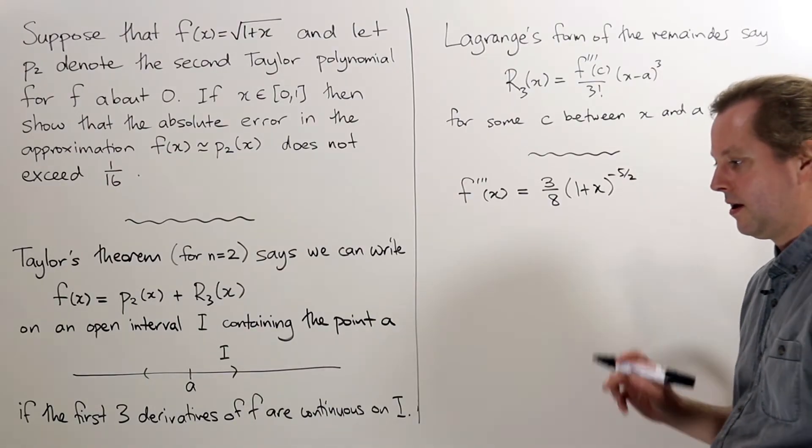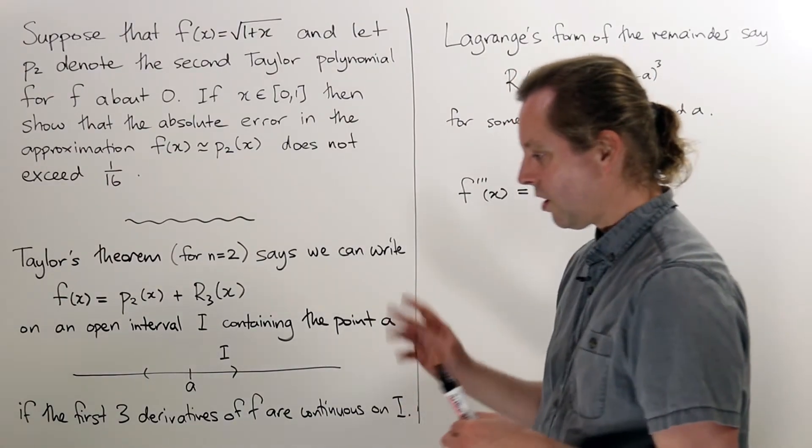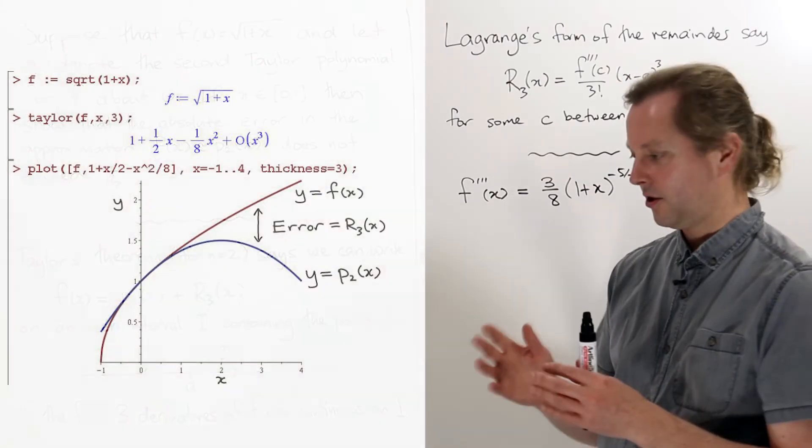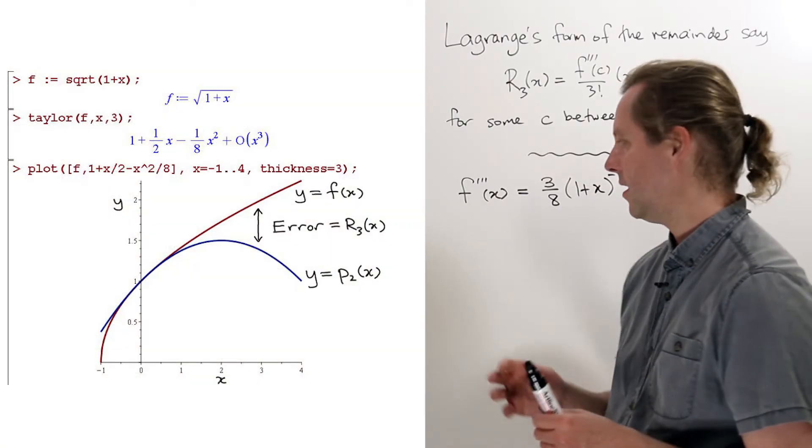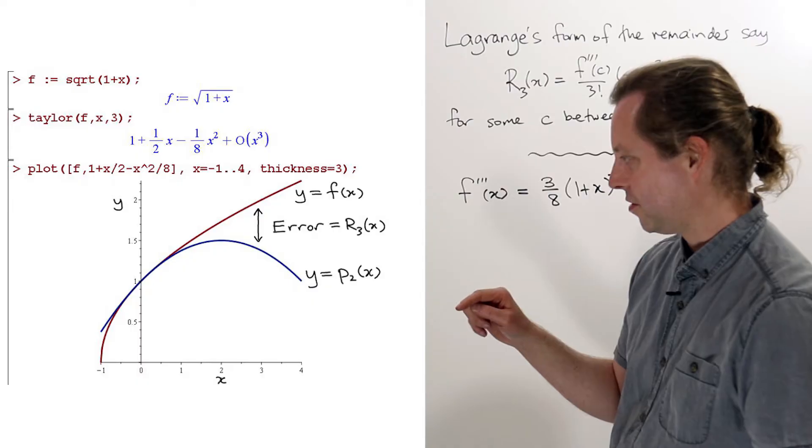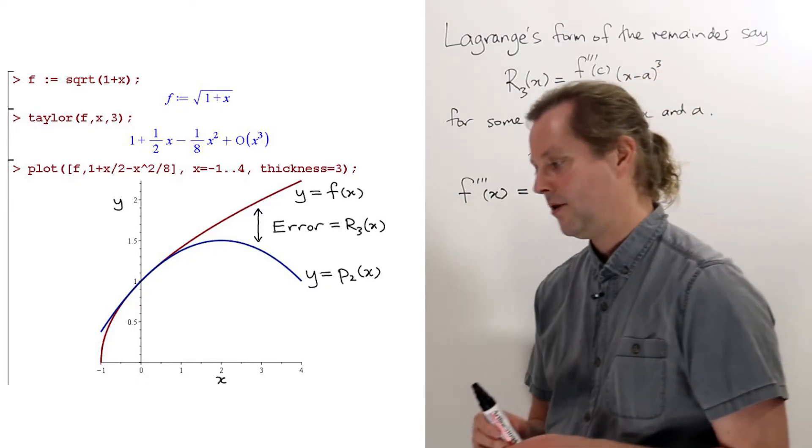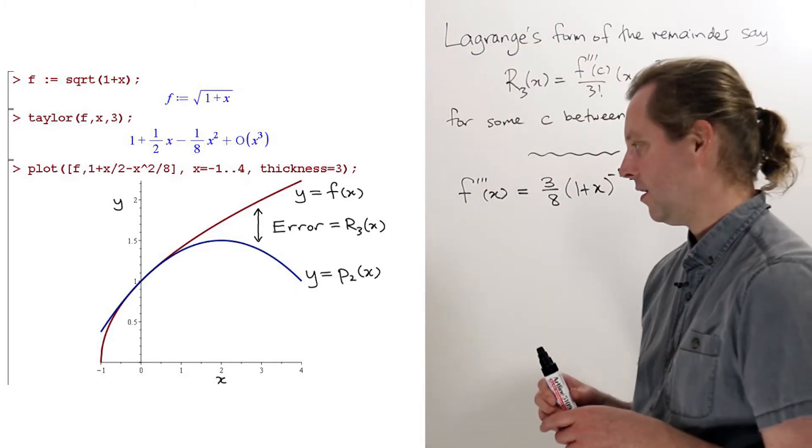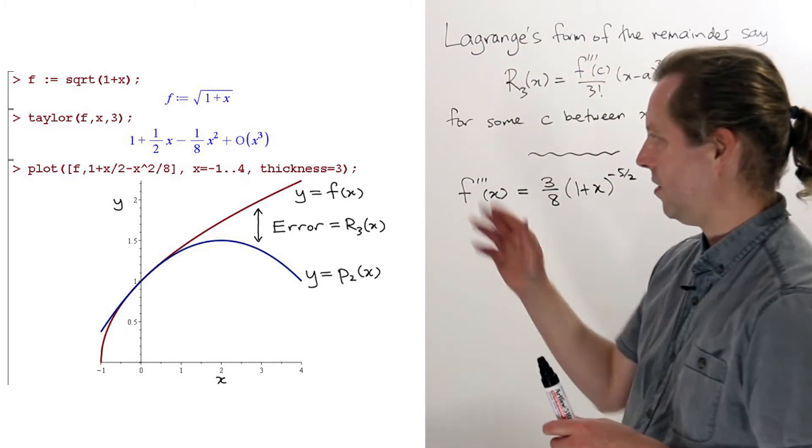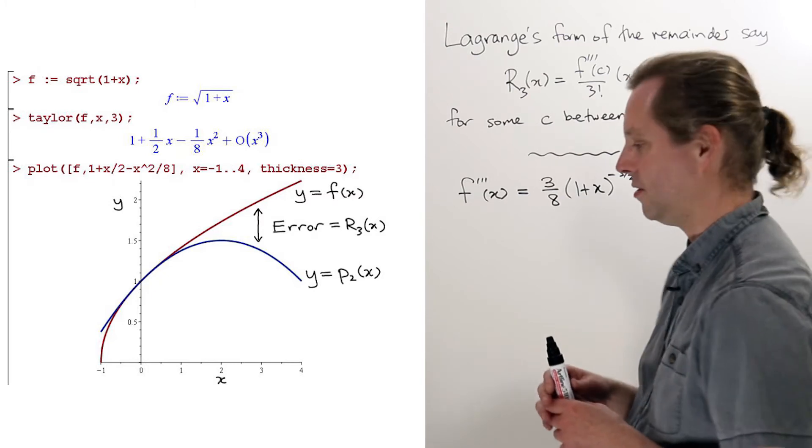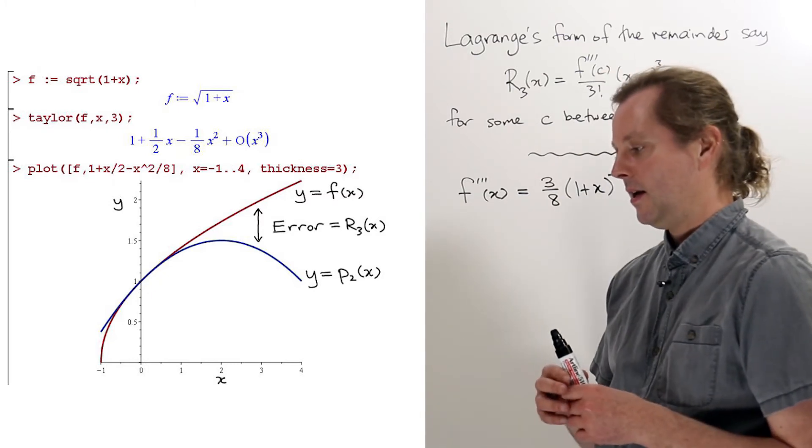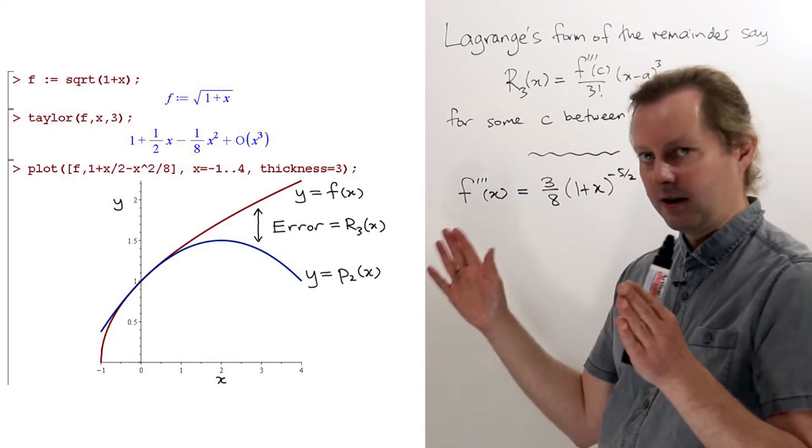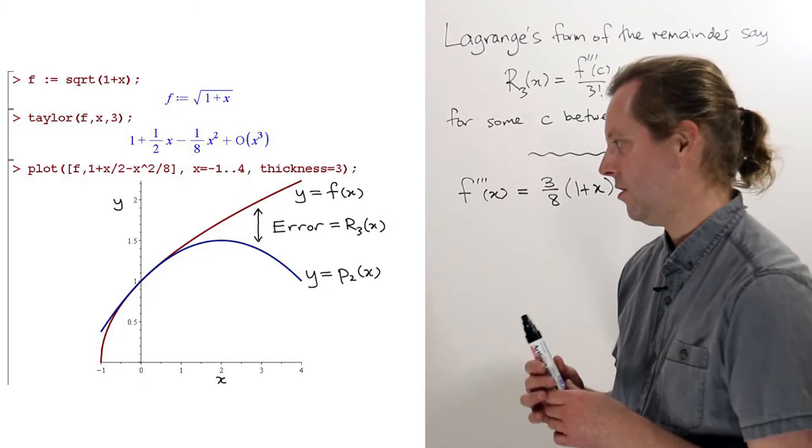Now the error, I've plotted actually the function itself and the approximation p2 on the same graph, and you can see that they're quite close to each other near the point zero, and that's where we're looking in this question. Our a is going to be zero.